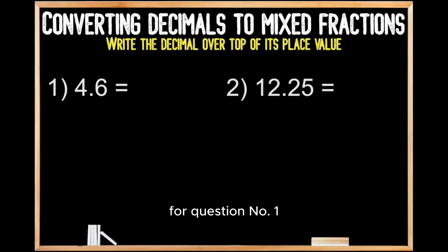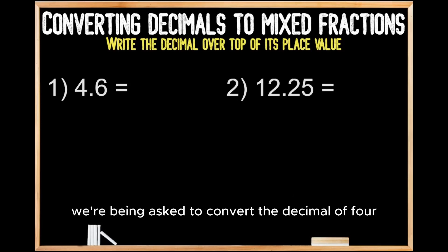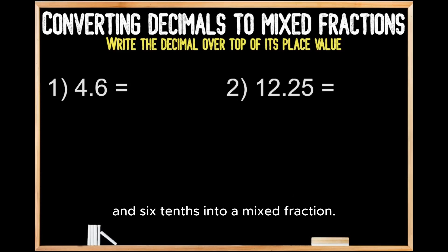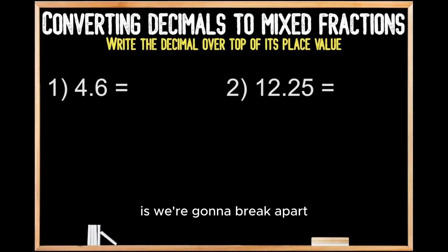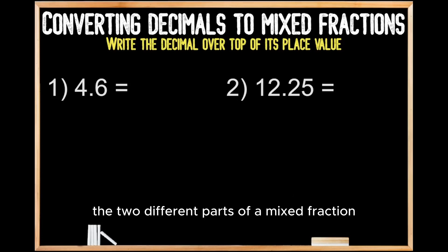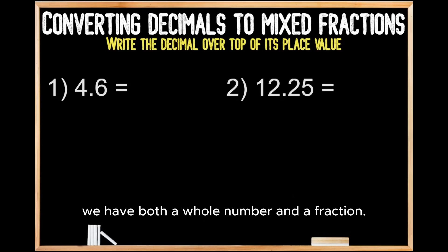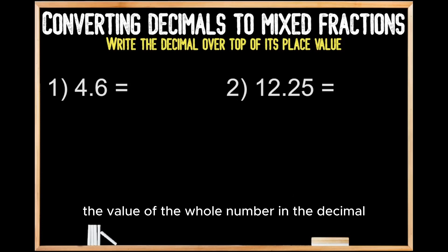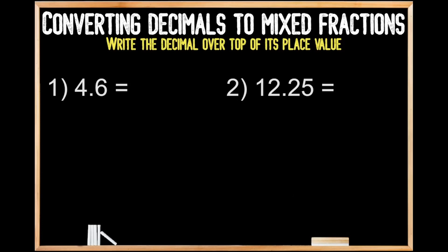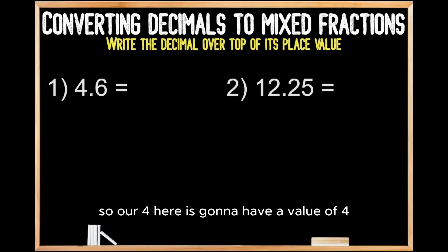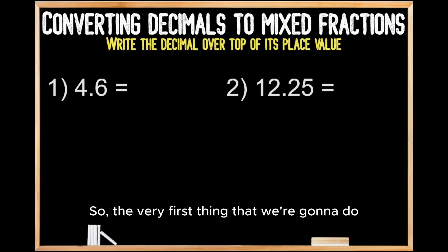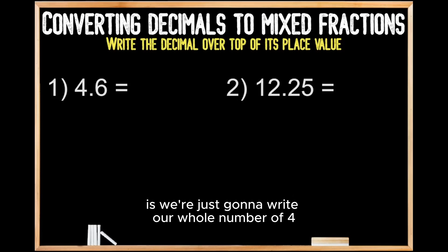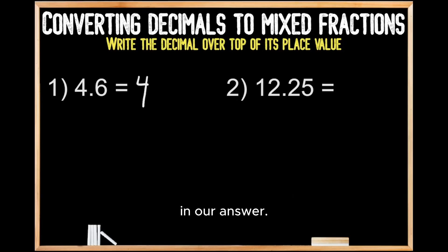For question number one, we're being asked to convert the decimal of 4 and 6 tenths into a mixed fraction. The first thing we're going to do is break apart the two different parts of a mixed fraction. In a mixed fraction, we have both a whole number and a fraction. The value of the whole number in the decimal is not going to change, so our 4 here will remain 4 in the mixed fraction. We'll write our whole number of 4 in our answer.